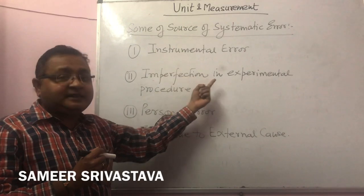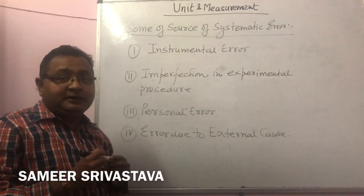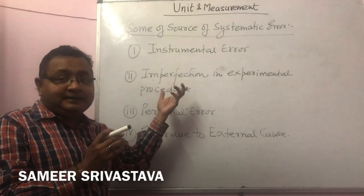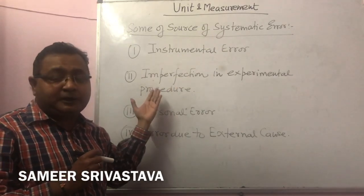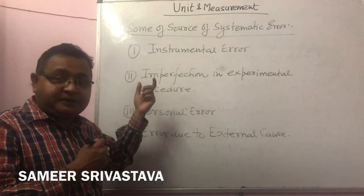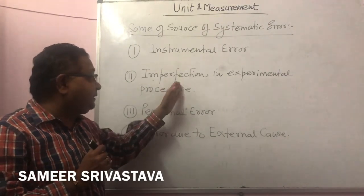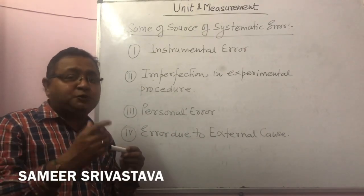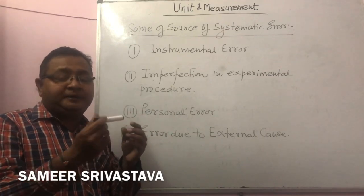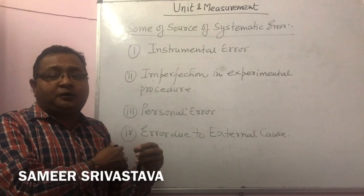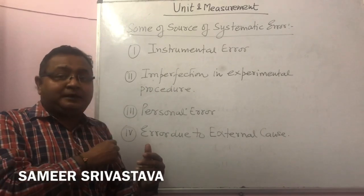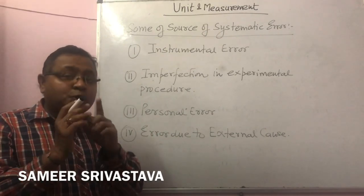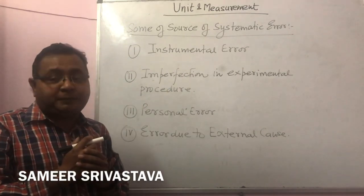The second source is imperfection in experimental procedure. If we make some experimental design and there is some lack in designing the setting of that apparatus, error comes in the observation. For example, if we want to find the temperature of a human body and we use a thermometer placed in the armpit, this thermometer provides a lower temperature compared to the actual body temperature. That is imperfection in experimental procedure.